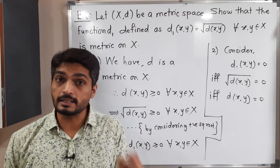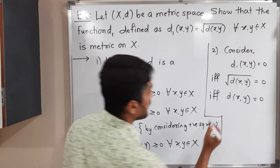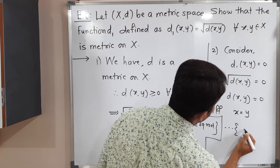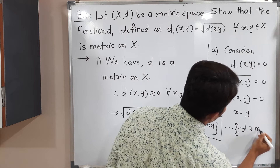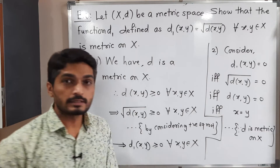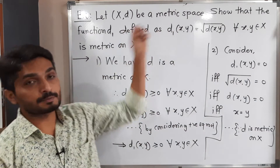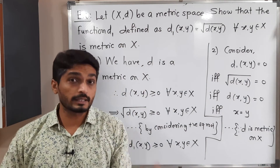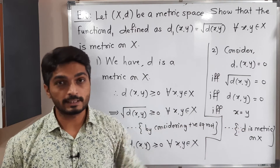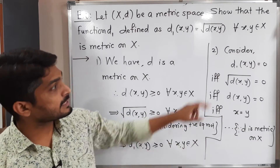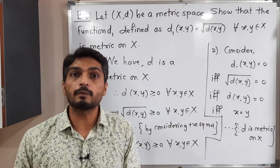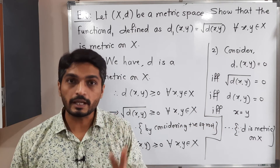Don't forget that d is a metric on X, so d satisfies all four properties. Therefore x = y, since d is a metric on X and therefore satisfies the second property: d(x,y) = 0 if and only if x = y. So we started with d1(x,y) = 0 and finally got x = y, meaning d1 satisfies the second property.